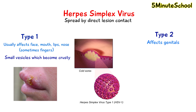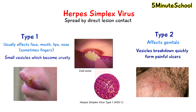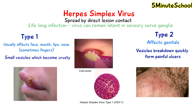Herpes simplex type 2 is associated with genital infections, and the vesicles which form usually break down quite quickly, forming painful ulcers. If you are infected with the herpes simplex virus, it is an infection which is present for life.